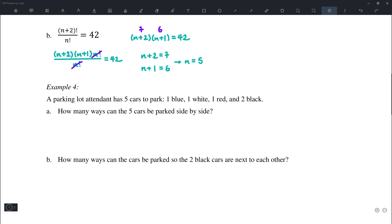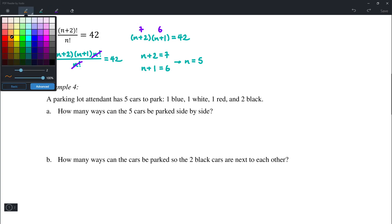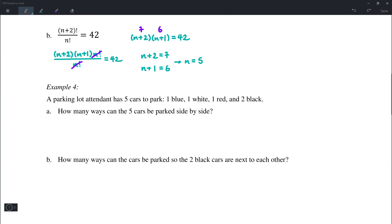Example number 4. So there are five cars to be parked: blue, white, red, and then two black cars. Simply then this is just going to be 5 factorial, which is equal to 120. So 120 ways.